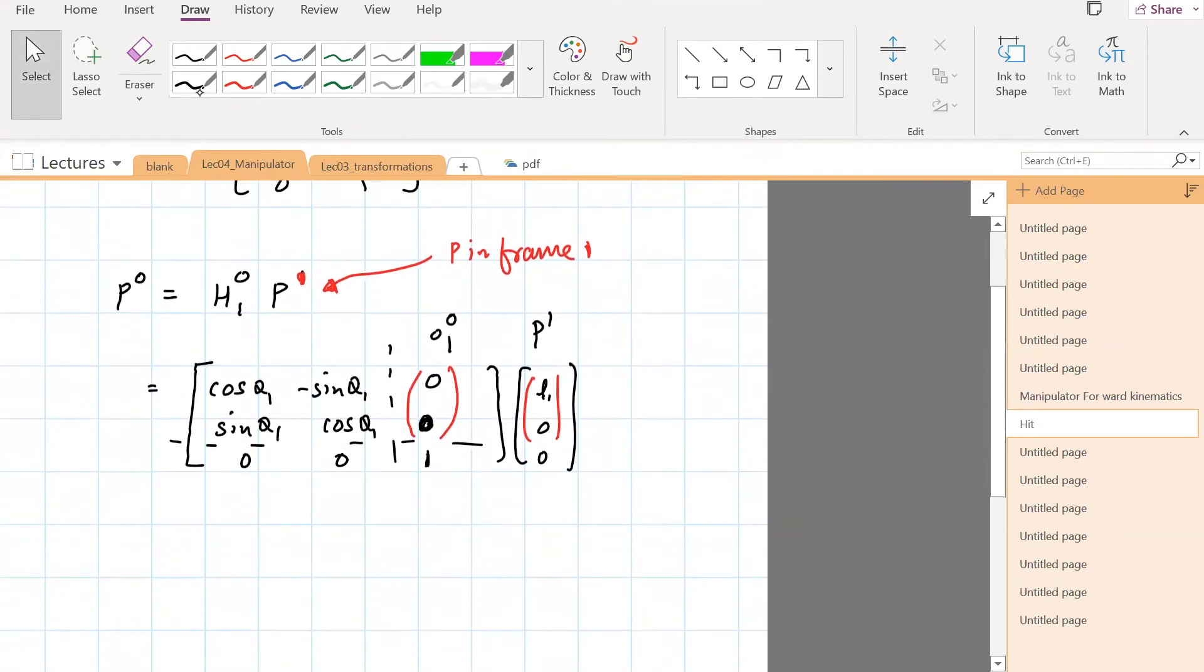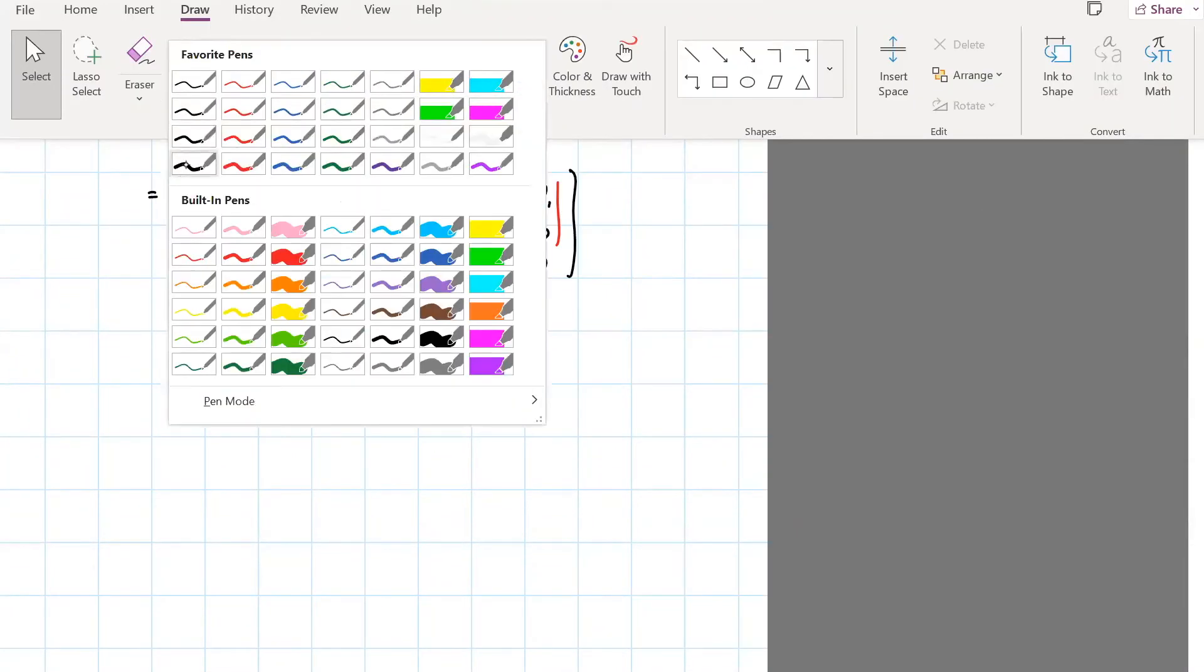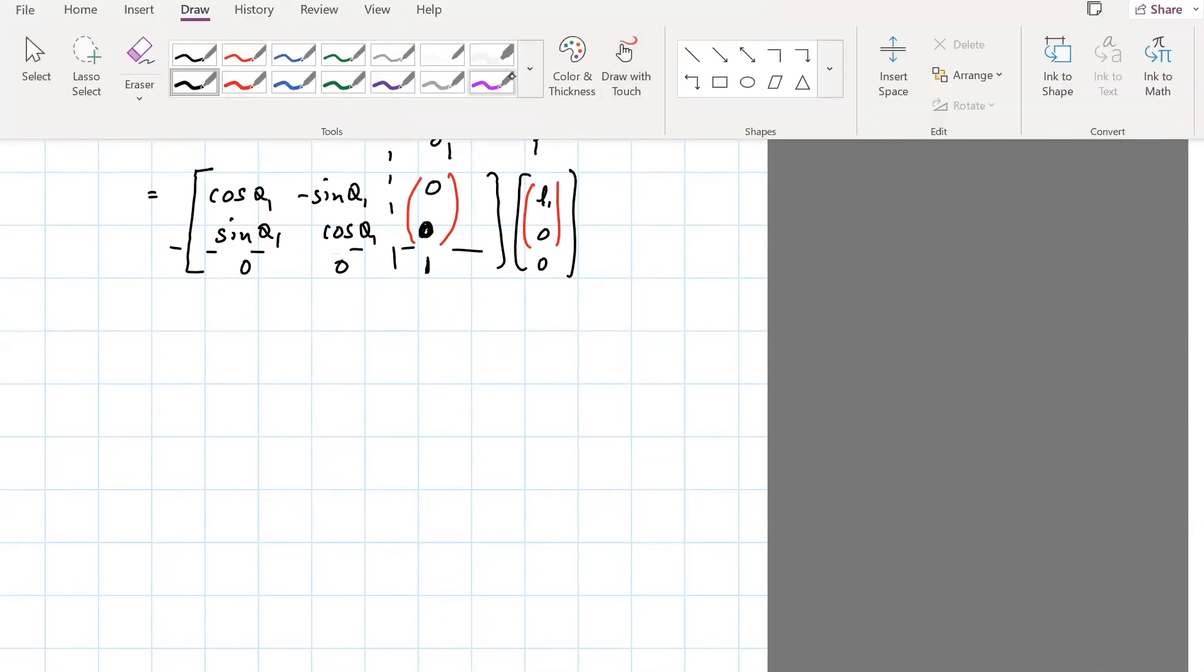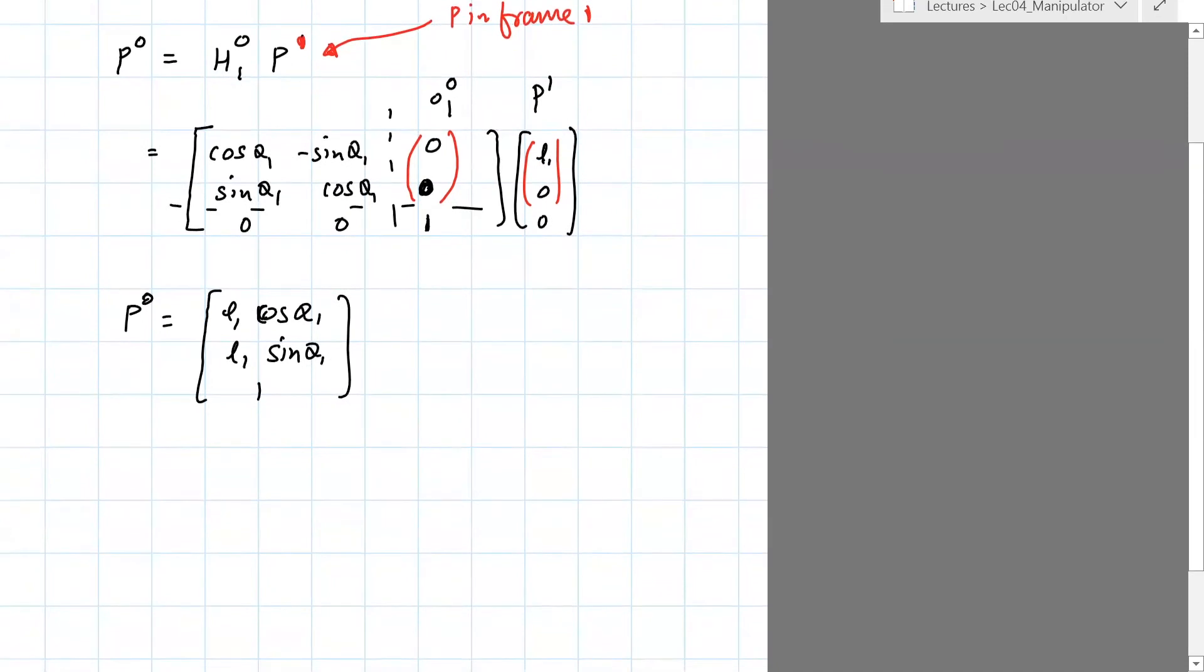So if you do the math, what you get is P_0 is L1 cosine theta 1, L1 sine theta 1, 1, which is not a surprise because you know, from the geometry, that's true. So we got the position of P.